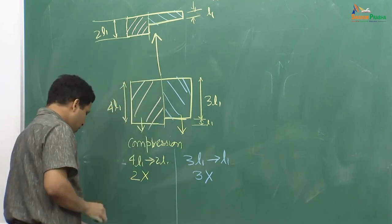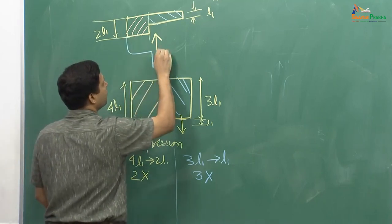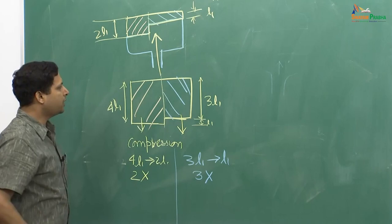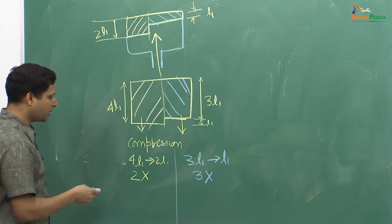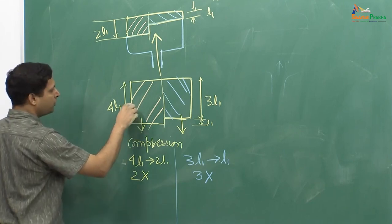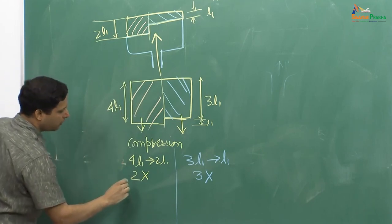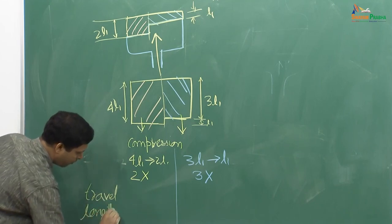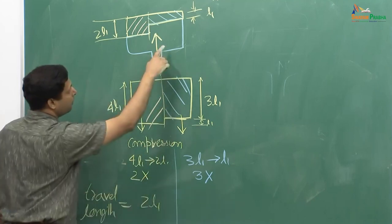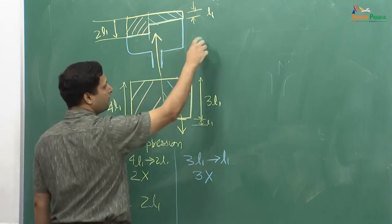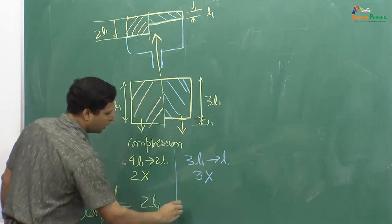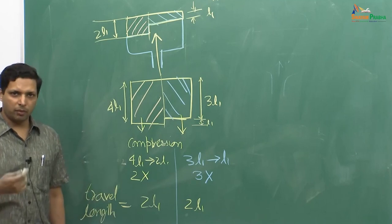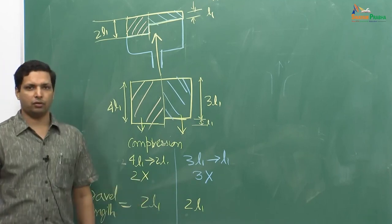Let us look at the two regions separately. In the taller region, you are getting from 4L1 to 2L1 — that is 2 times compression. But in the shorter region, you are getting from 3L1 to L1 — that is 3 times compression. So for even this simple two-level shape, we are getting differential compression, which would again mean different density in each region. Because we are using a single piston on each side, both sides have the same travel length of 2L1, but the compression ratio is different.